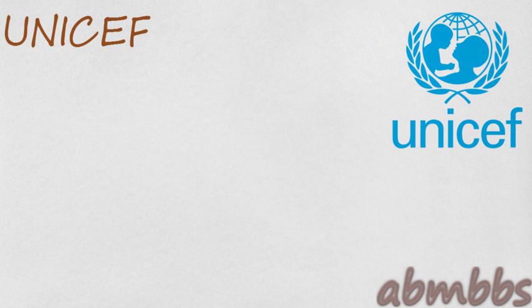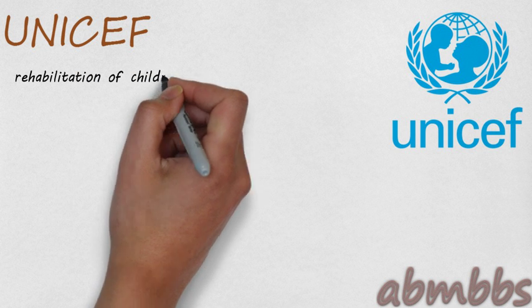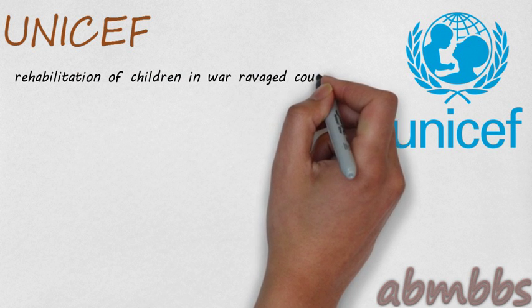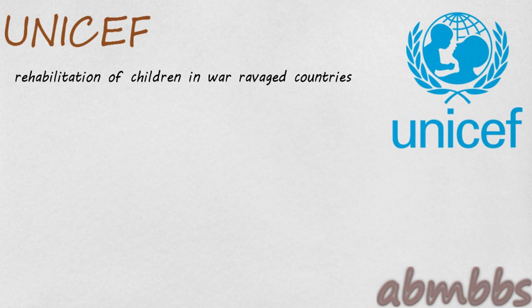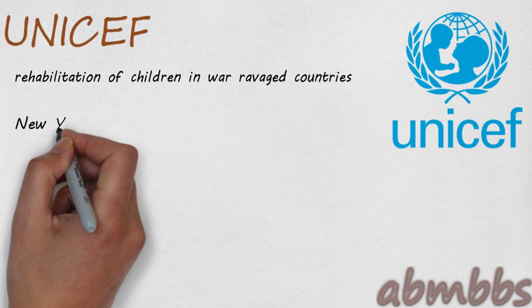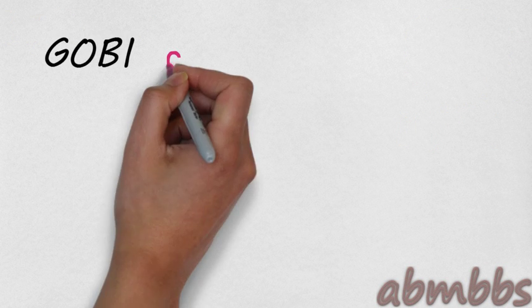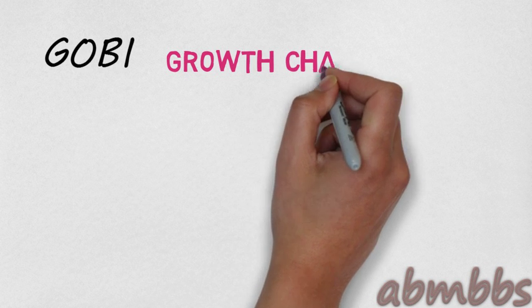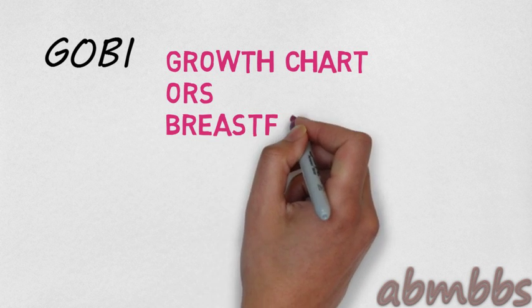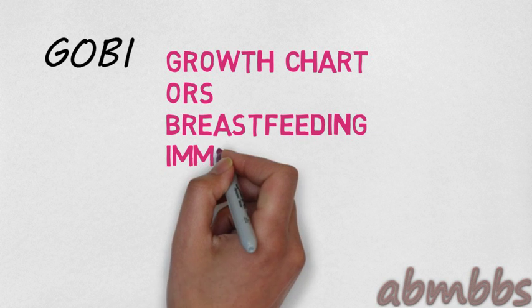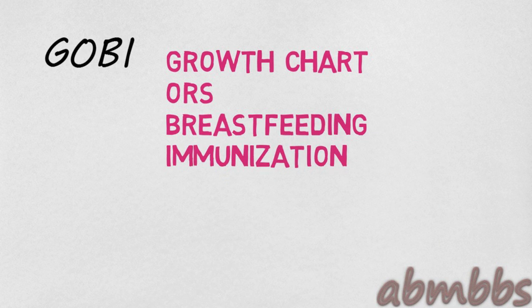First comes UNICEF. It stood for United Nations International Children's Emergency Fund. It was set up to deal with the rehabilitation of children in war-ravaged countries. In 1953, it was renamed United Nations Children's Fund. Its headquarters is in New York. UNICEF is actively promoting the GOBI campaign: G for Growth Chart, O for ORS, B for Breastfeeding, and I for Immunization.